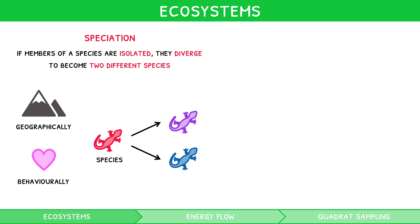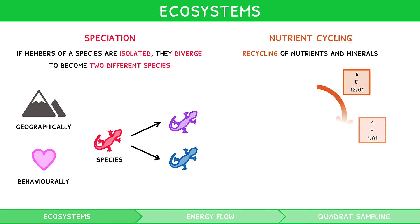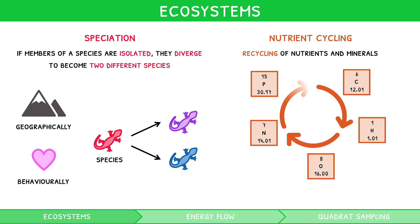The second is nutrient cycling. This is the recycling of nutrients and minerals, including carbon, hydrogen, oxygen, nitrogen and phosphorus, within an ecosystem. For an ecosystem to be fully sustainable, these nutrients must be continually available.